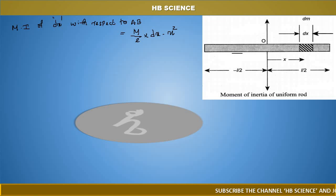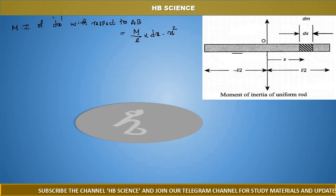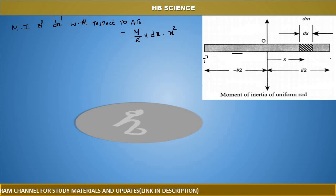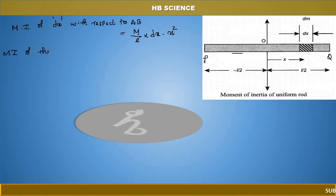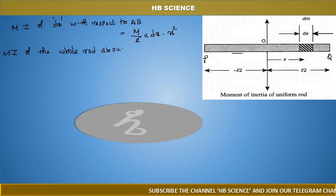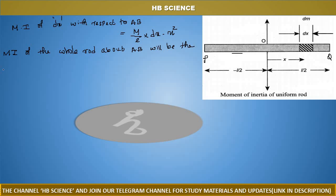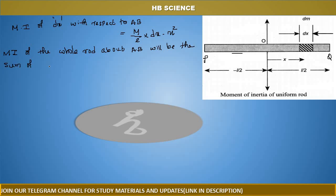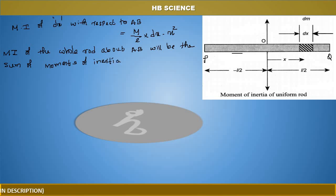For the total moment of inertia of the uniform rod, the integration limits go from minus L by 2 to plus L by 2, since P is at minus L by 2 and Q is at plus L by 2. The moment of inertia of the whole rod about axis AB will be the sum of moments of inertia of all such elements.